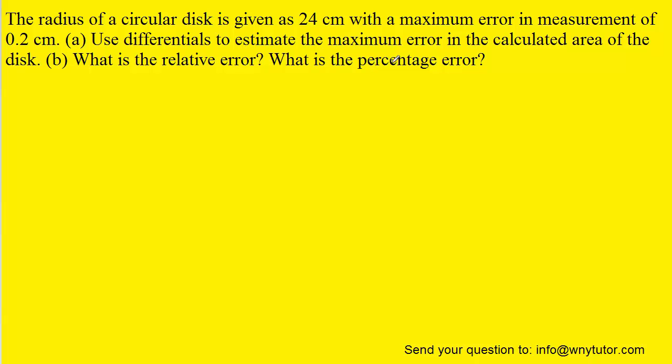Now, since the question is asking us to estimate the maximum error in the calculated area of this disk, and the disk happens to be circular, we can consider first the formula for the area of a circle, which is pi r squared.